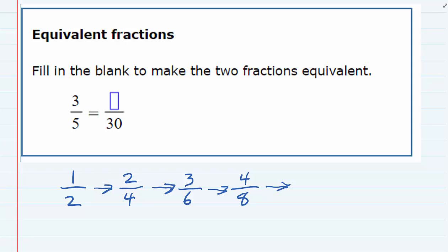So back to this question, we have 3 fifths and we're trying to write it as an equivalent fraction where something is over 30. So the question here becomes how can I turn that 5 into a 30? And we've already shown that we can use multiplication to get equivalent fractions.